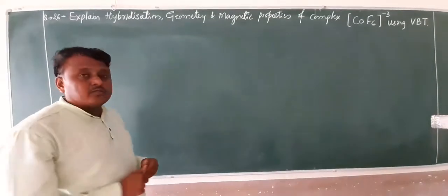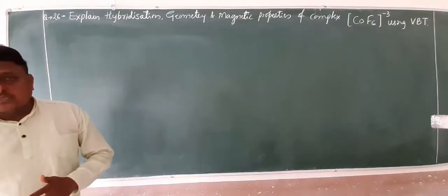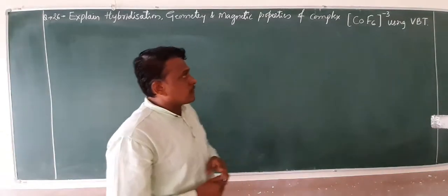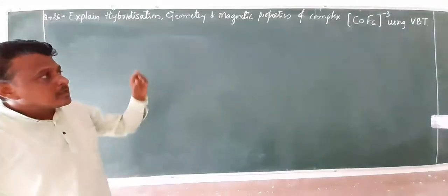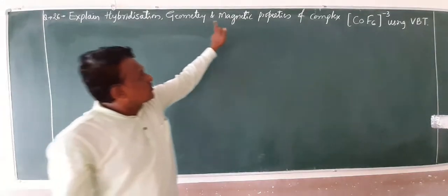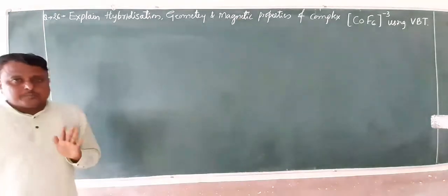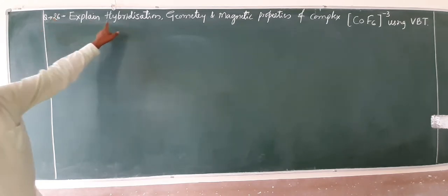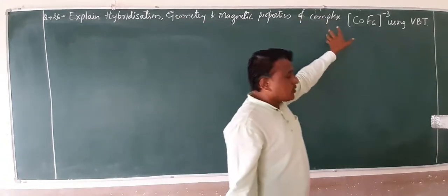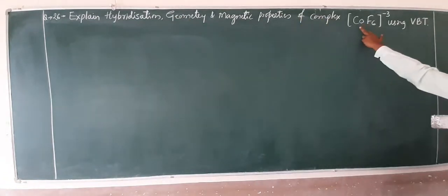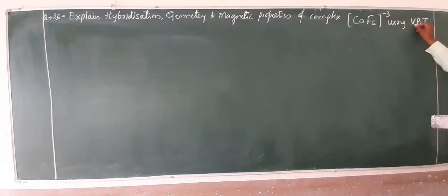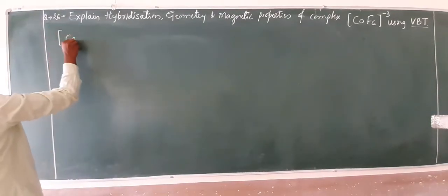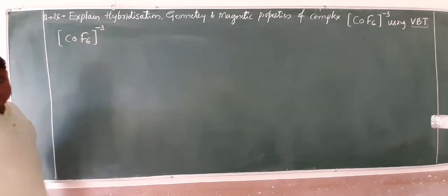Welcome to everyone, dear friends. Today we move on to the next complex: cobalt with 6 fluoride means hexafluoridocobaltate(III) ion. This complex of the hybridization, geometry, magnetic property. This is your total complex: CoF6.